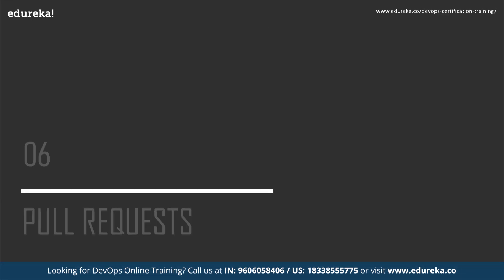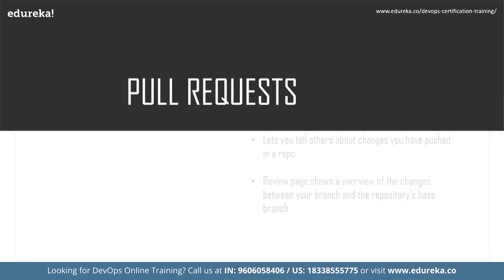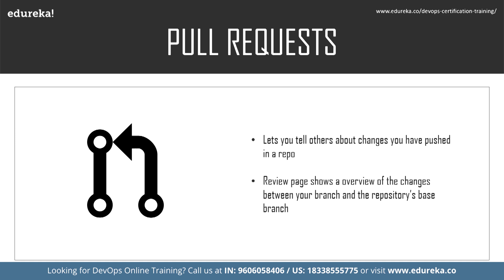Now let's learn about the pull request command. Pull requests let you tell others about changes you have pushed to a branch in a repository on GitHub. Once a pull request is open, you can discuss and review the potential changes with collaborators and add follow-up comments before your changes are finally merged into the base branch. On GitHub, after the user initializes a pull request, you will see a review page that shows a high-level overview of the changes between your compare branch and the repository's base branch.